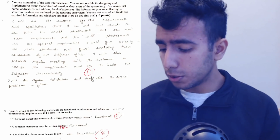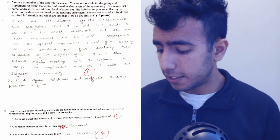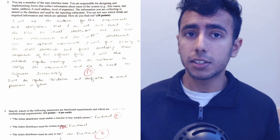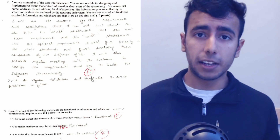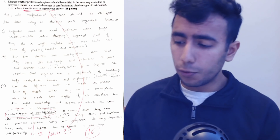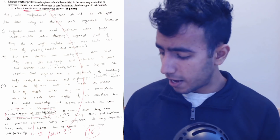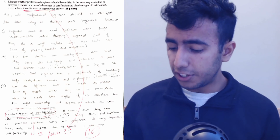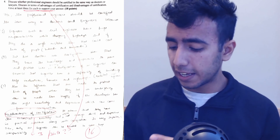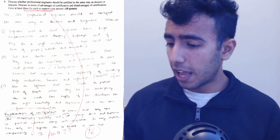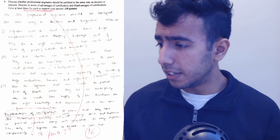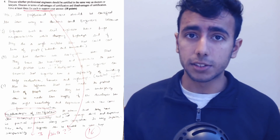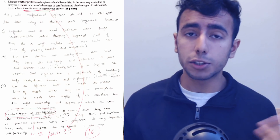The next question was also practical and required us to know some of the basic concepts that we should know while building software. Moving on to question four — I did some mistakes because we were supposed to give three points and I gave only one point for the disadvantage, but this question was easy as well and also practical and situation-based.